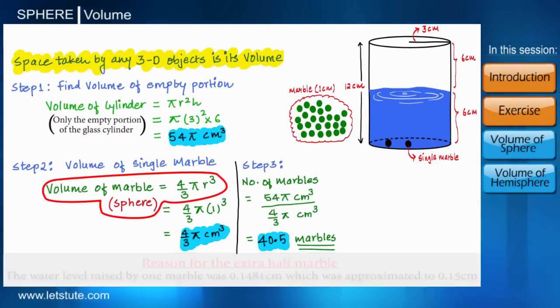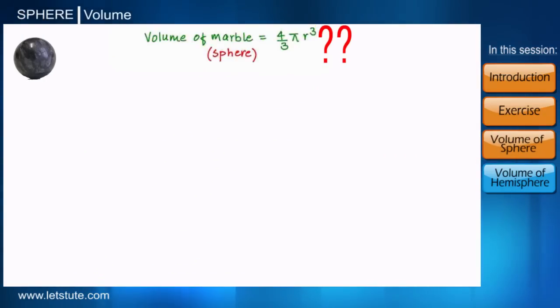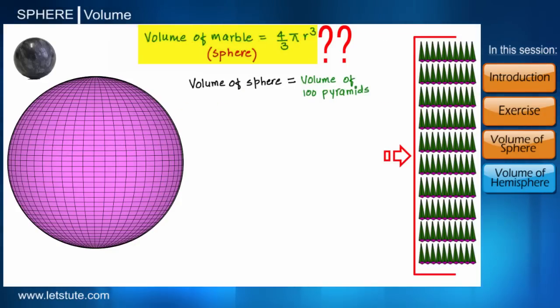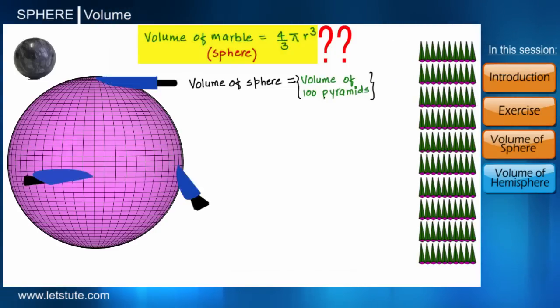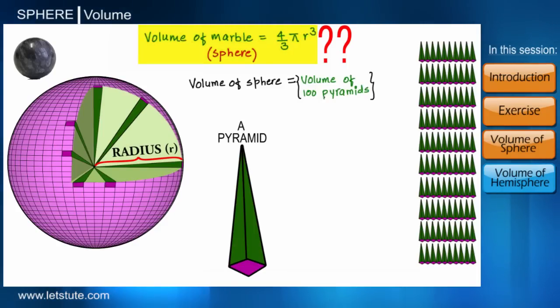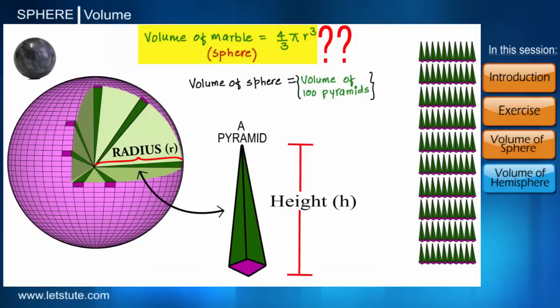So to begin with our derivation, consider this sphere is made up of hundred pyramids with tiny bases. So we can say that the volume of this sphere is equal to the volume of 100 pyramids. If we cut open the sphere, we can see that the radius of the sphere is actually the height of the pyramid. And as we all know, the radius of the sphere is same throughout.